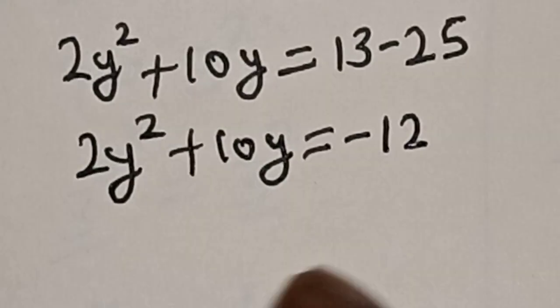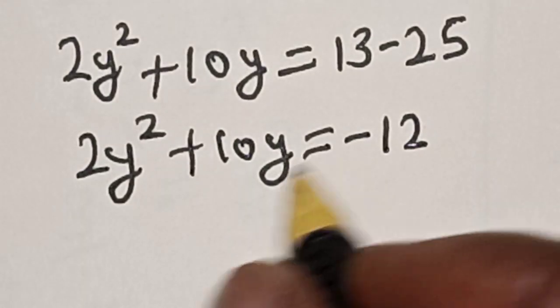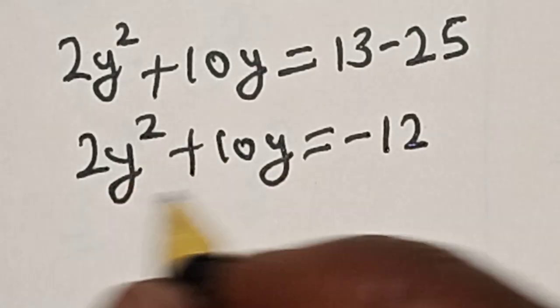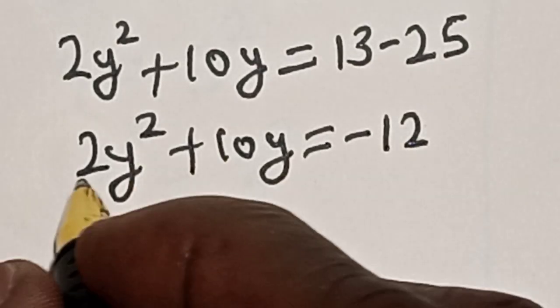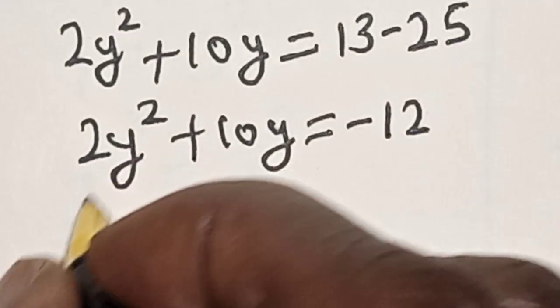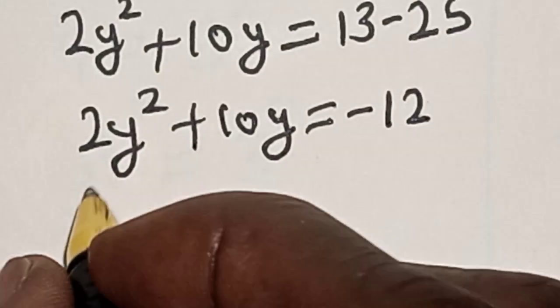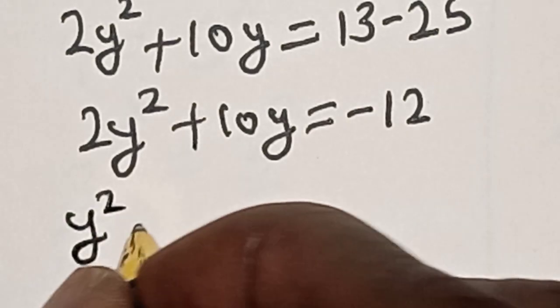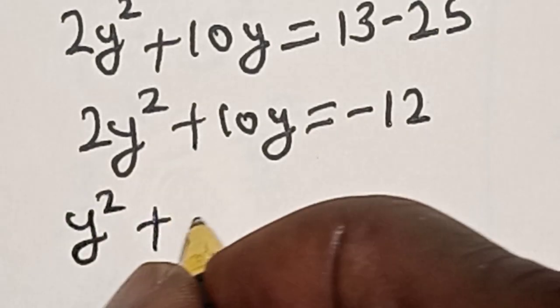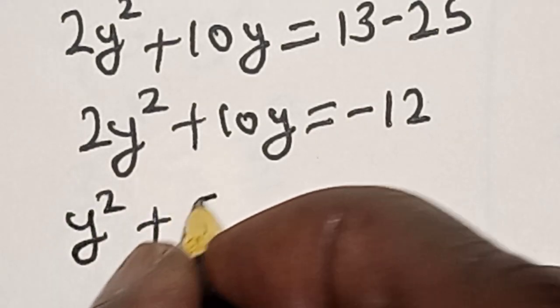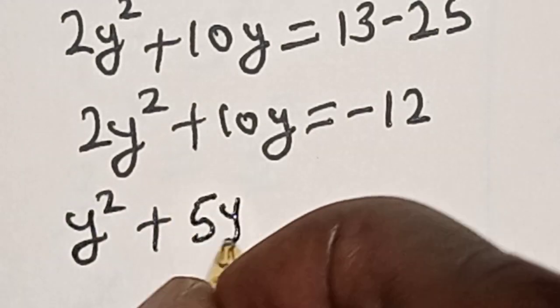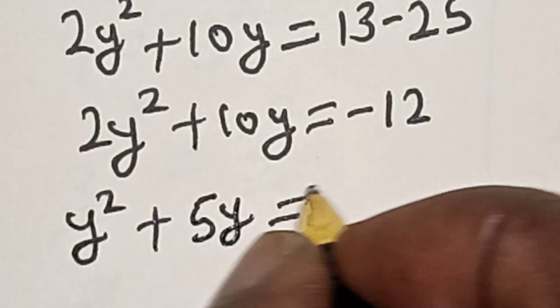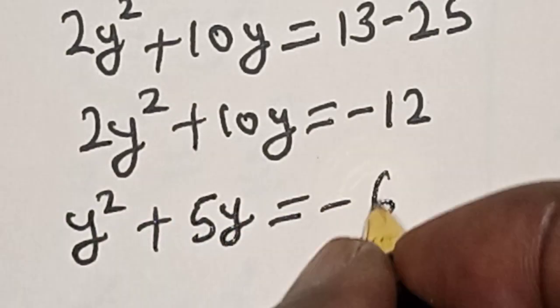Let's divide through by 2. Then we have y squared plus 5y is equal to minus 6.